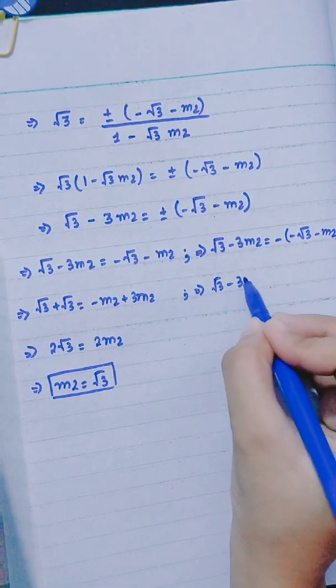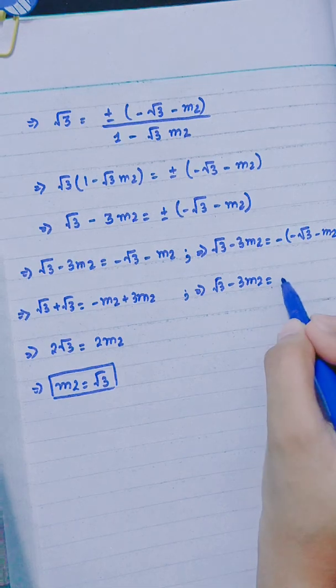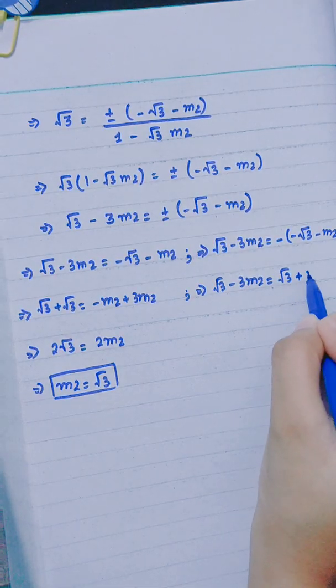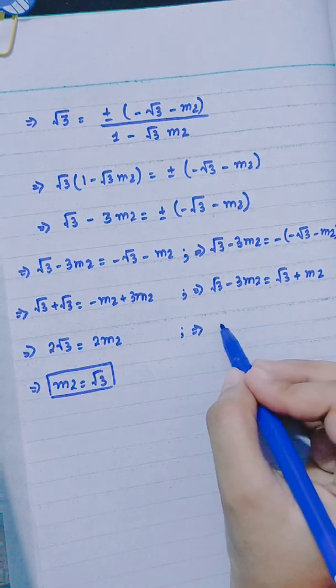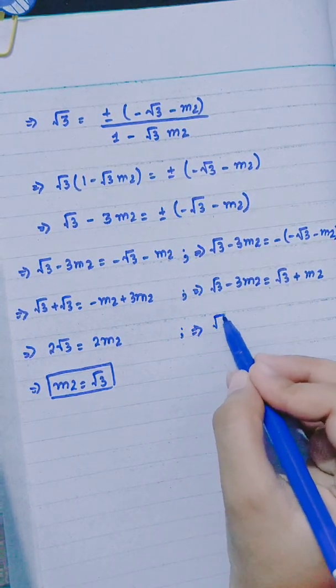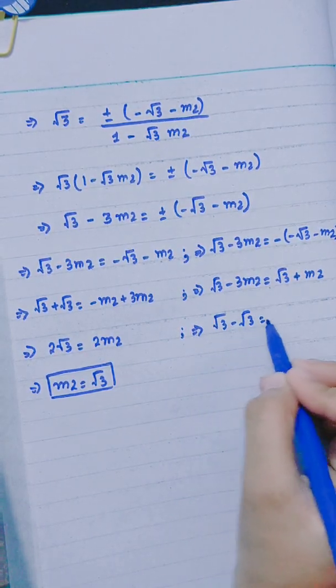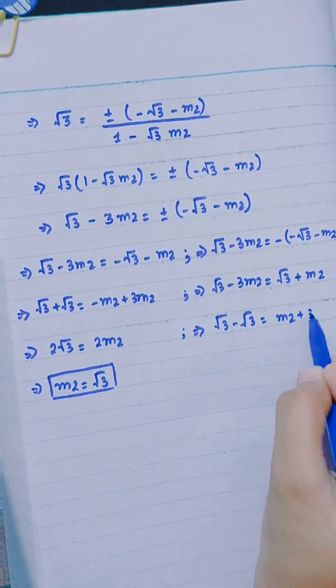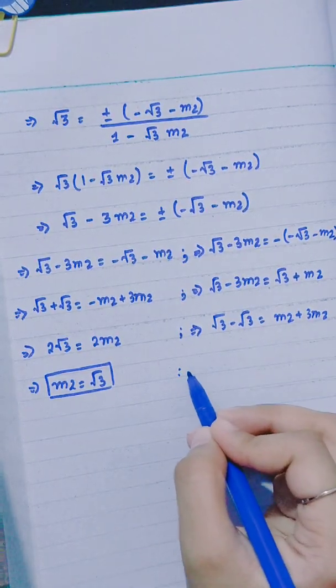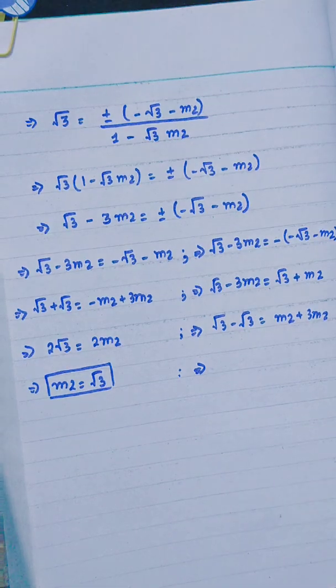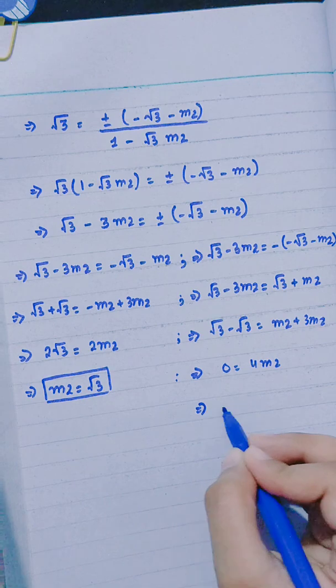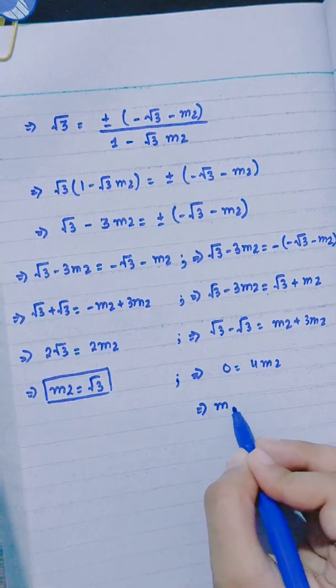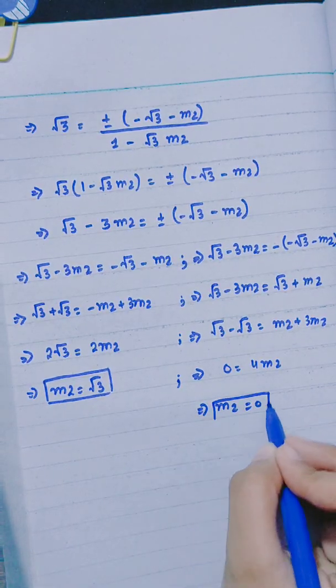Taking negative sign: √3 - 3M2 = √3 + M2. This gives √3 - √3 = M2 + 3M2, so M2 = 0.